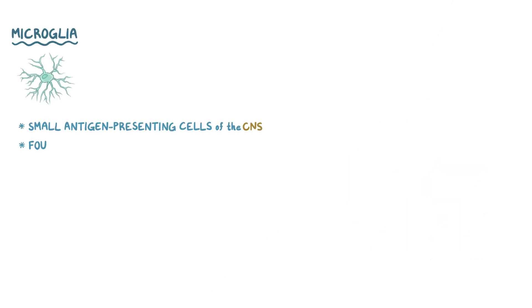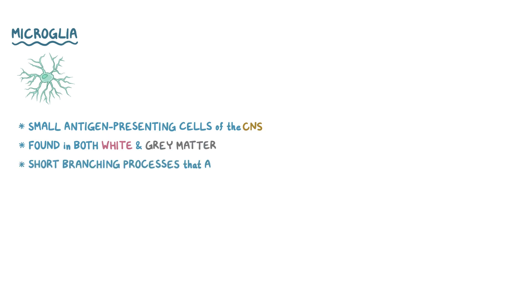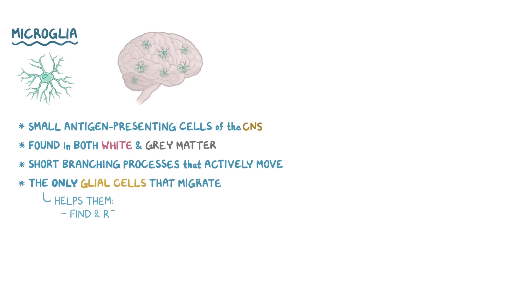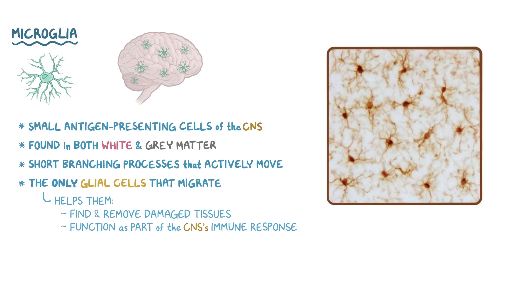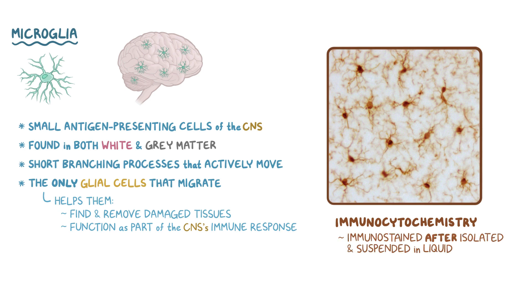Microglia are small antigen-presenting cells of the CNS that are found in both white and gray matter. They have short branching processes that actively move and are the only glial cells that also migrate to different parts of the CNS, which helps them find and remove damaged tissue and function as part of the CNS's immune response. Similar to astrocytes, microglia can be visualized more easily using techniques like immunostaining. Immunocytochemistry is a form of immunostaining where the cells are immunostained after they've been isolated and suspended in liquid, which is why the microglia in this image are the only cells present and are spaced out relatively evenly.